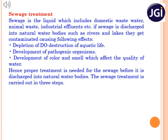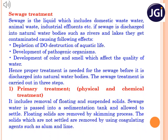So, sewage water is to be treated properly before discharging it to nature. The sewage treatment involves three steps. The first is primary treatment, which is also called physical and chemical treatment. Here the sewage is passed into a sedimentation tank and allowed to settle. The solids which float on the surface are removed by skimming. The suspended particles are made to settle down by adding coagulating agents such as alum and lime.